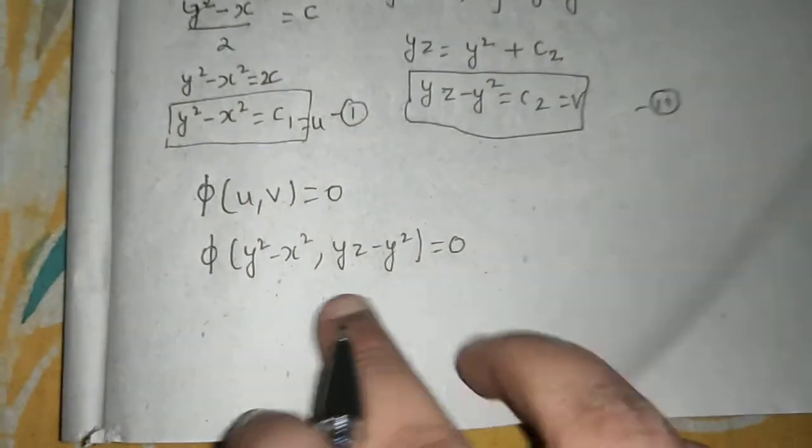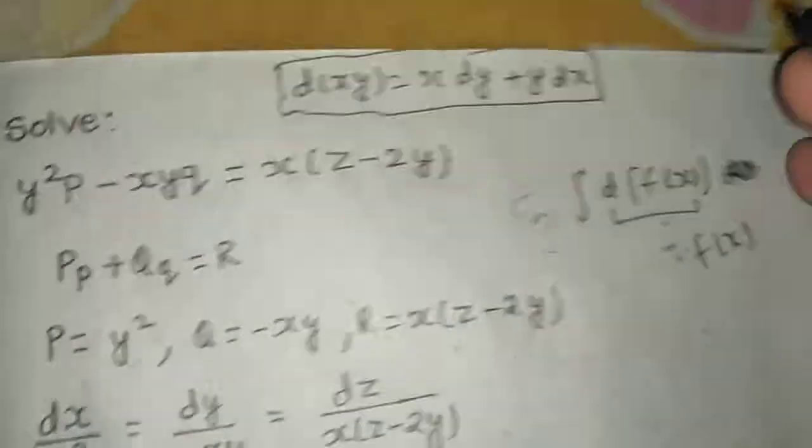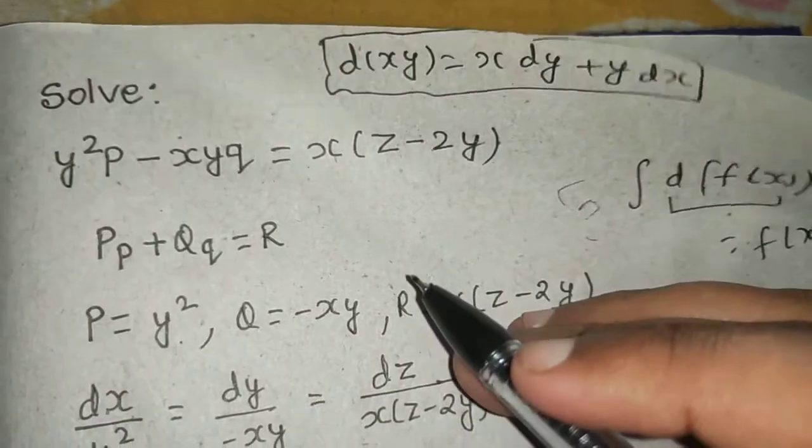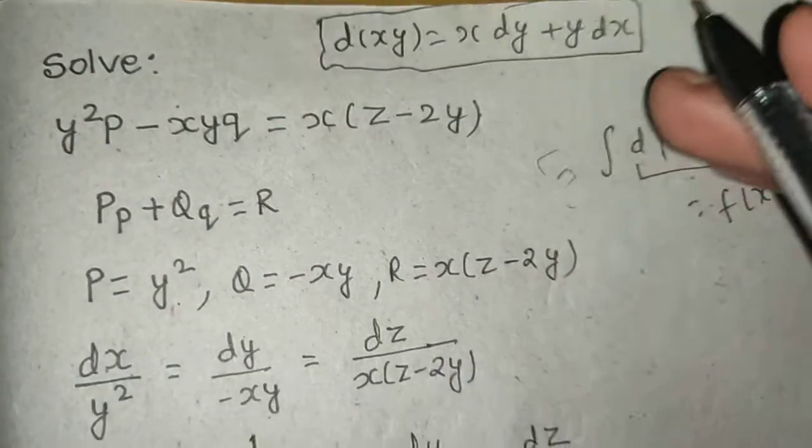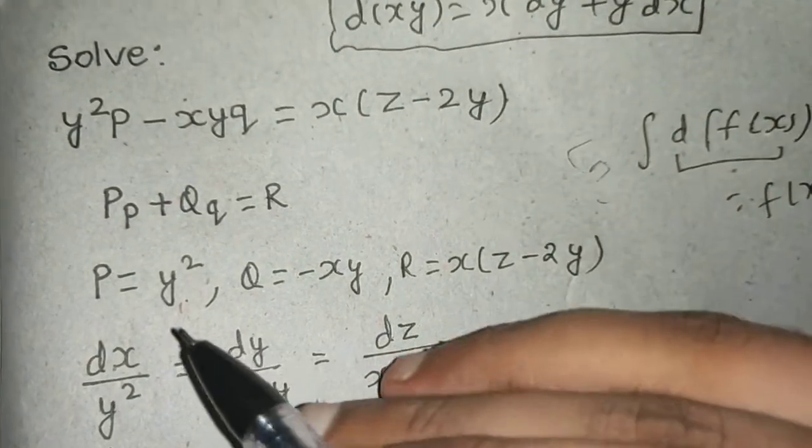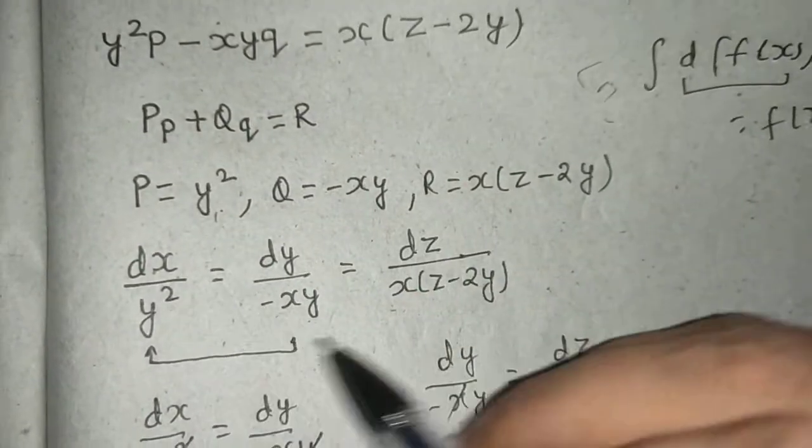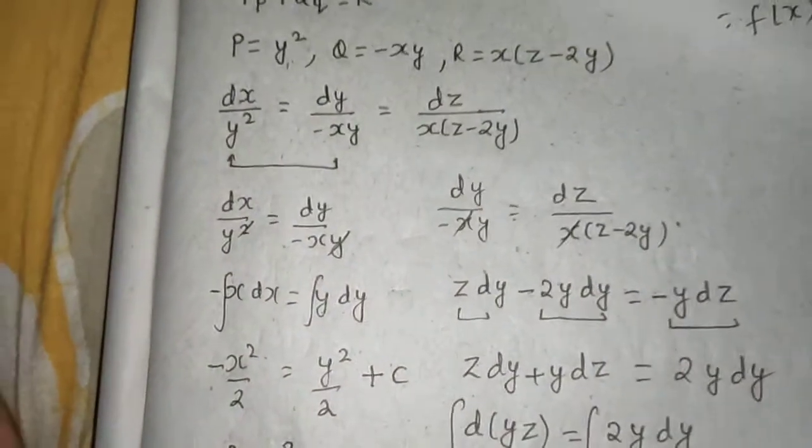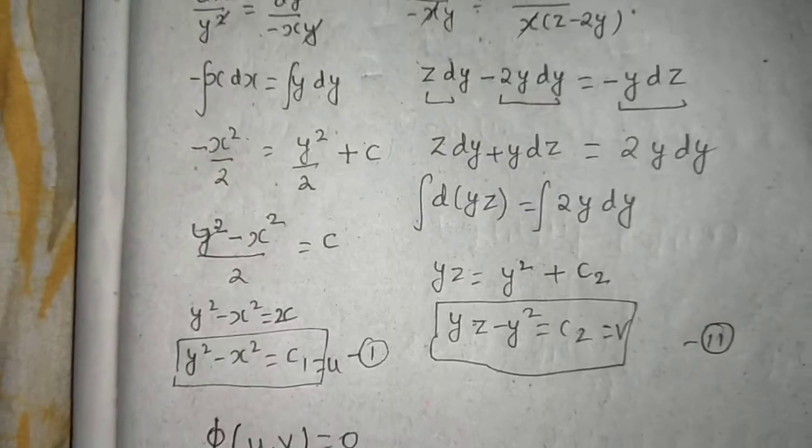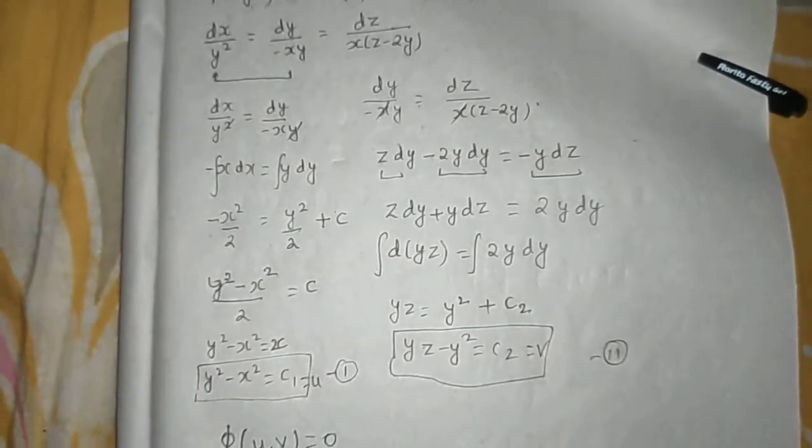I hope you understood this question. This was Lagrange's linear partial differential equation. We found the value of P, Q, and R, then this was our auxiliary or subsidiary equation. This was method of grouping which we used. We didn't need method of multipliers in this particular question.